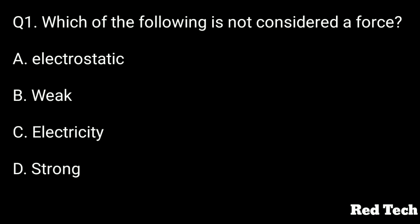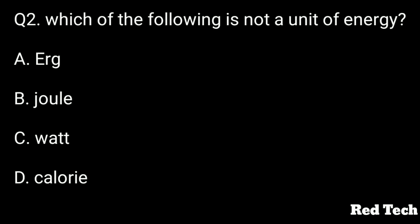The right answer is option C, electricity. Electricity is not considered as a force, whereas the others — electrostatic force, weak force, and strong force — are all considered forces. Weak force is seen in beta decay. Question number two: which of the following is not a unit of energy?